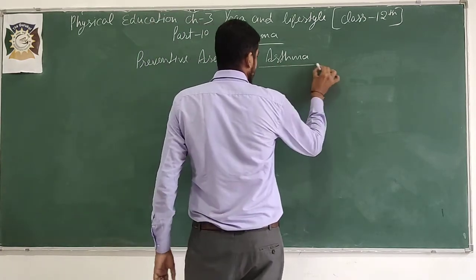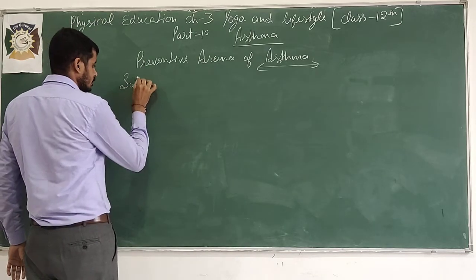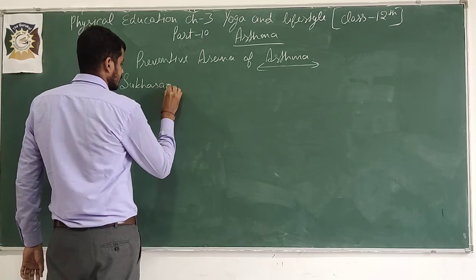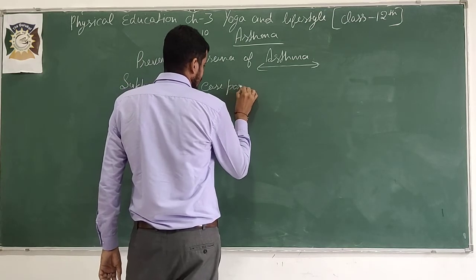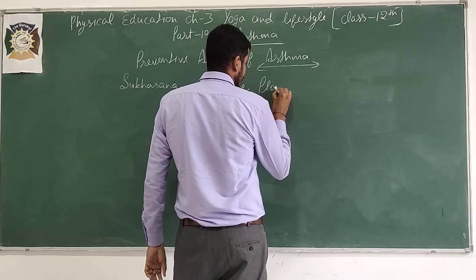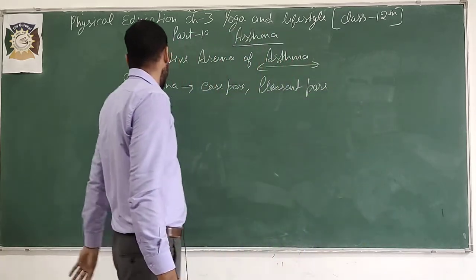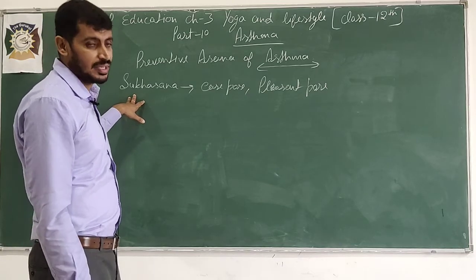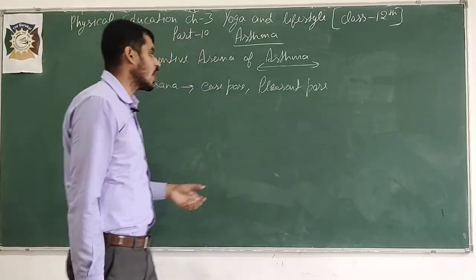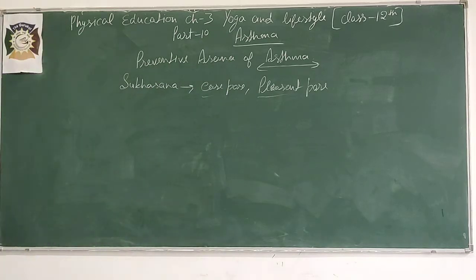The first preventive asana for asthma is Sukhasana. It is known as the ease pose or pleasant pose — these are the other names of Sukhasana. 'Sukh' means pleasure, where we feel happy; 'asana' means posture or attaining the pose. It is the Sukhasana — ease pose, pleasant pose, decent pose — these are the names of this asana.